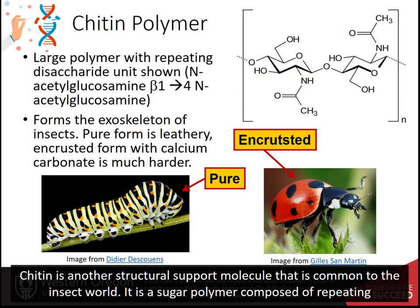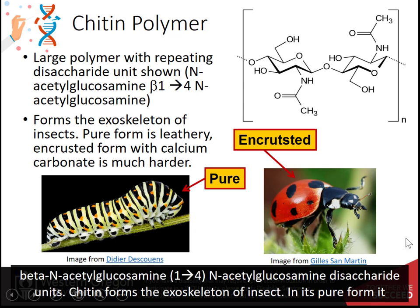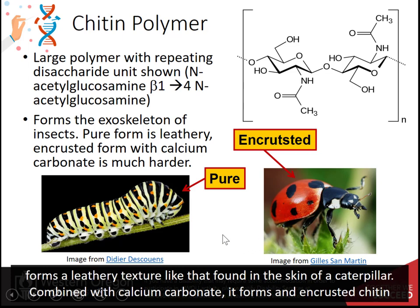Chitin is another structural support molecule that is common to the insect world. It is a sugar polymer composed of repeating beta-N-acetylglucosamine 1,4-N-acetylglucosamine disaccharide units. Chitin forms the exoskeleton of insects. In its pure form, it forms a leathery texture like that found in the skin of a caterpillar.